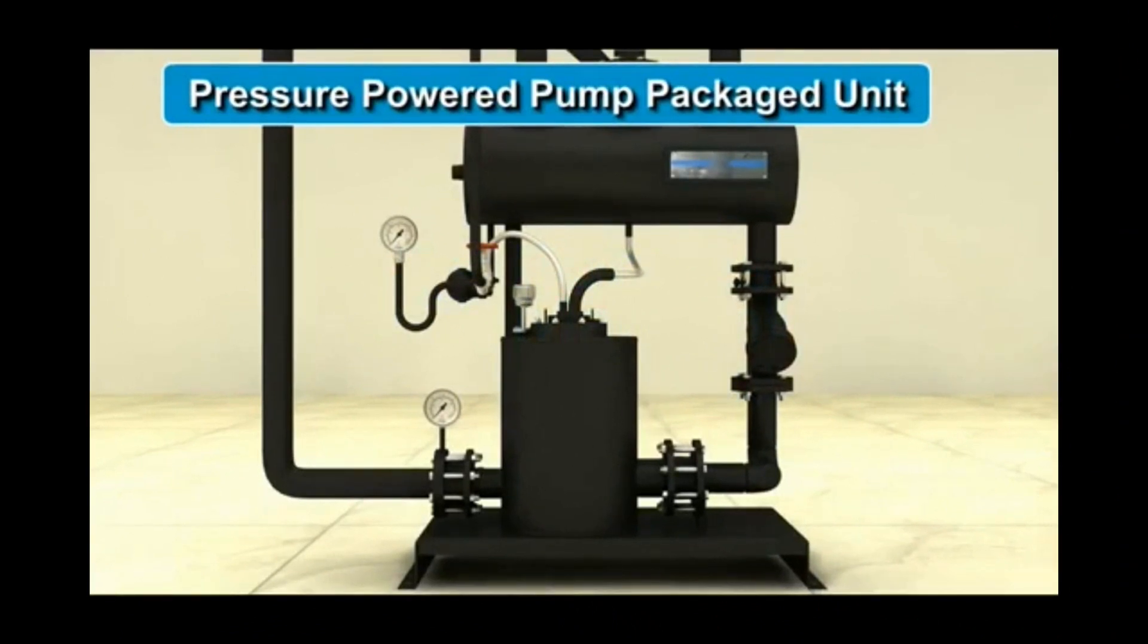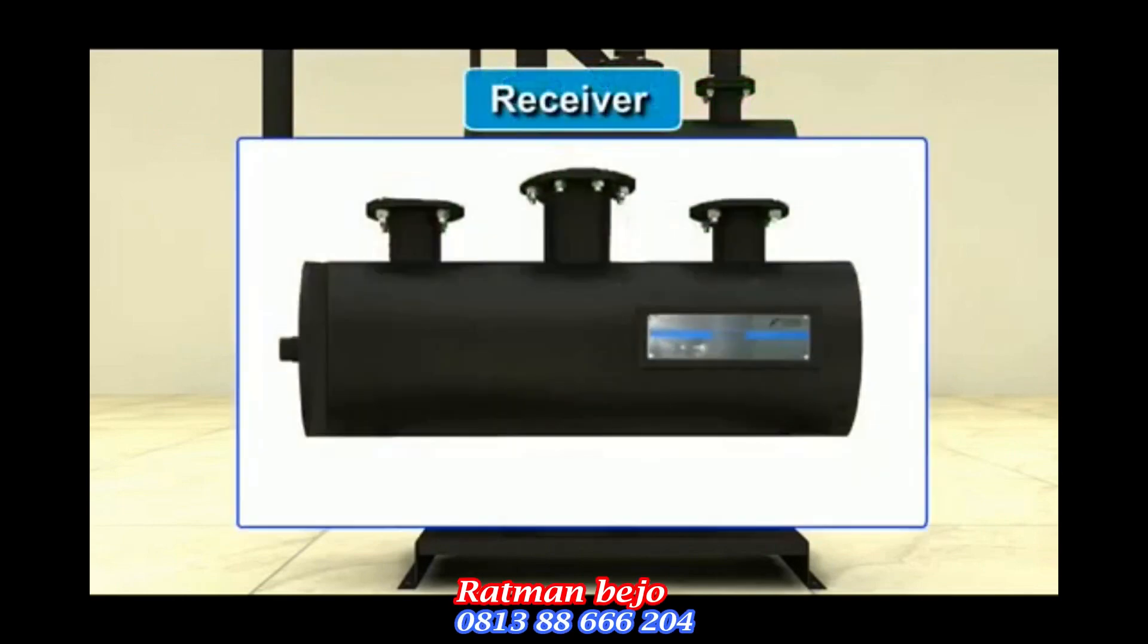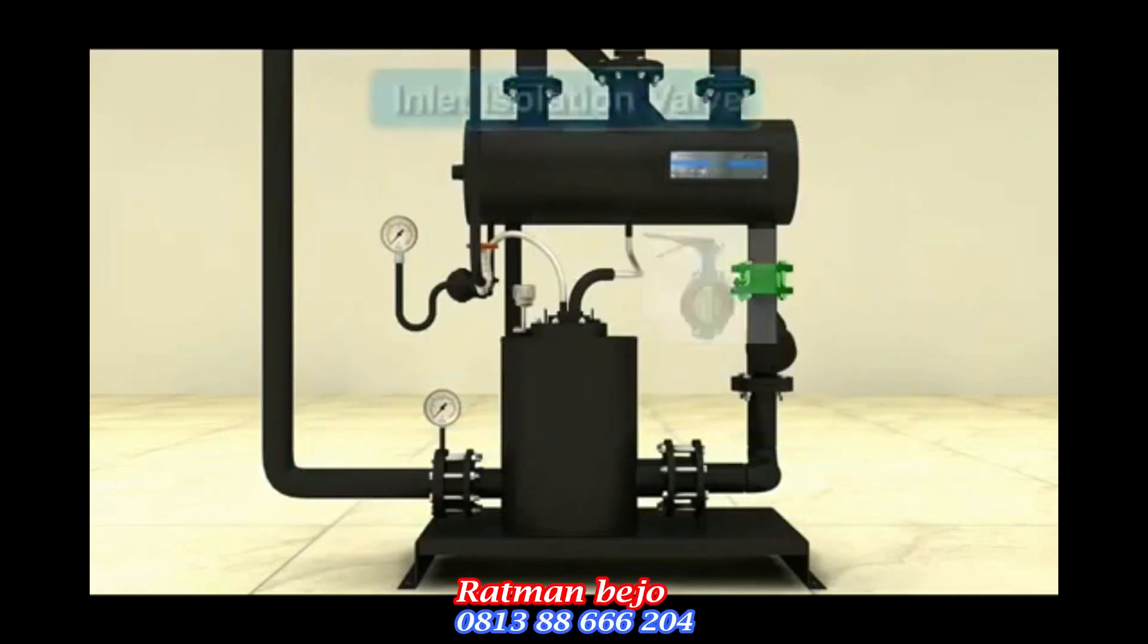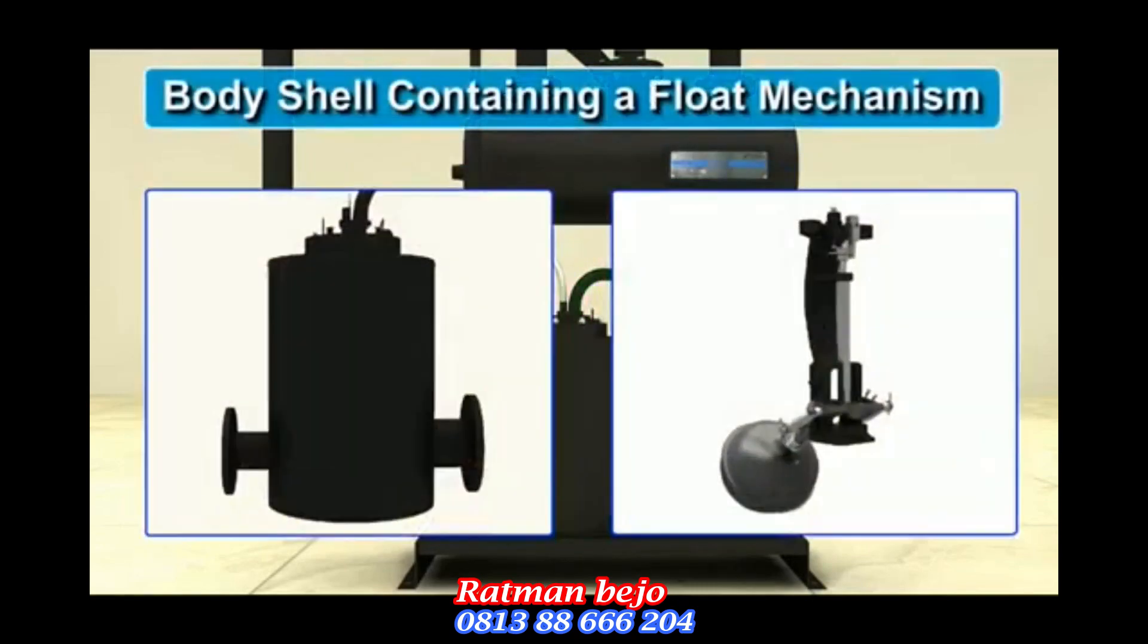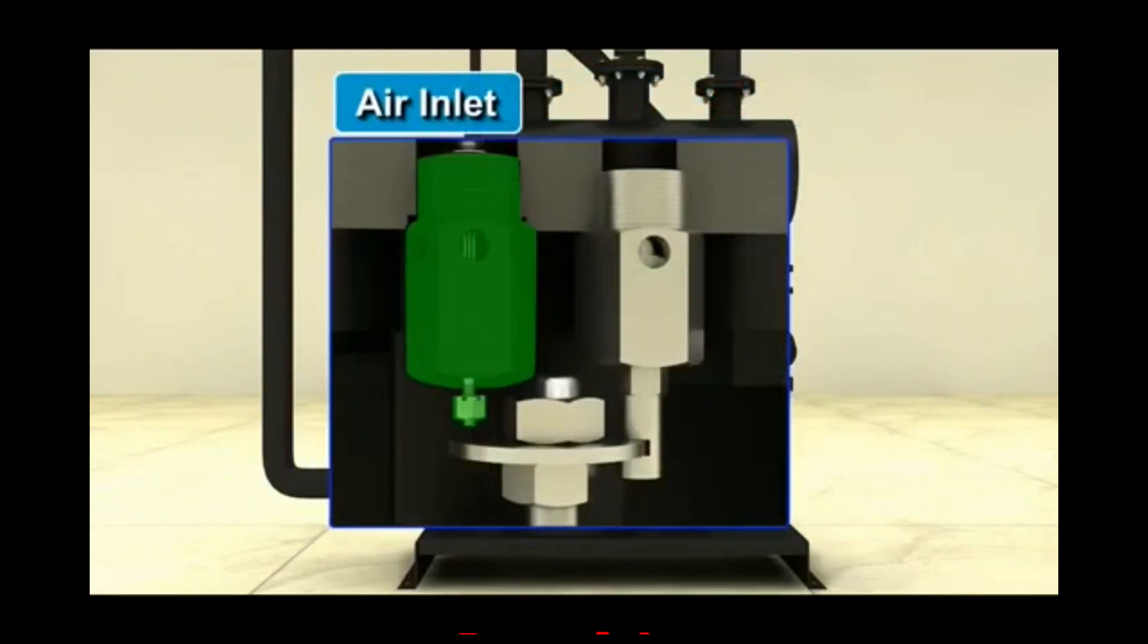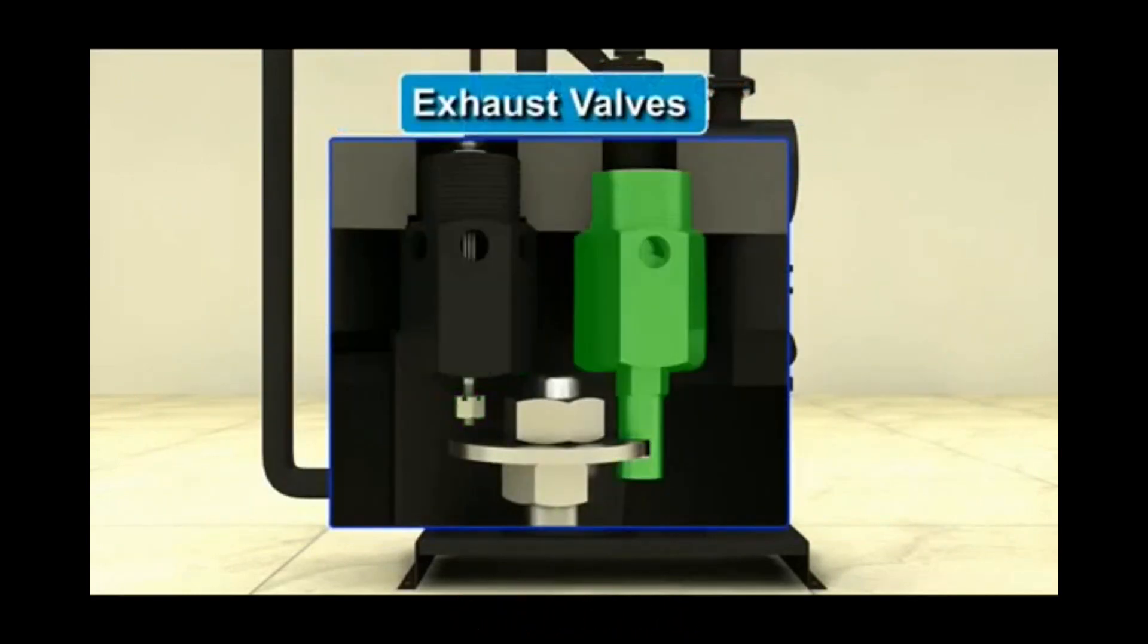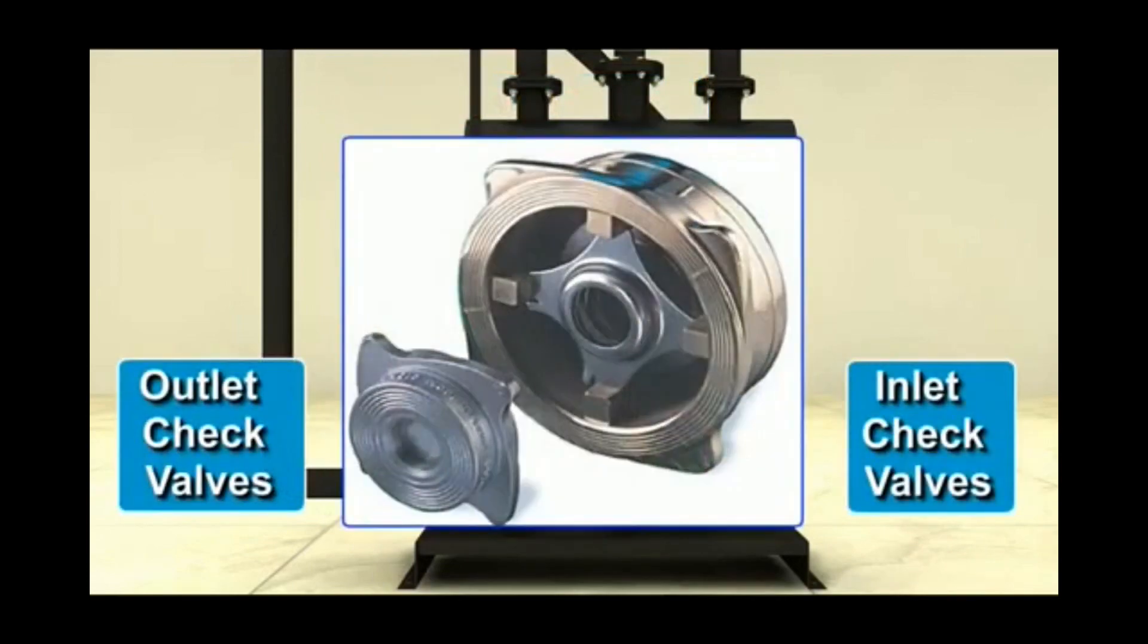A pressure powered pump packaged unit consists of a receiver, inlet isolation valve, strainer chamber, a body shell containing a float mechanism which operates a set of motive steam or air inlet and exhaust valves, and inlet and outlet disc check valves.